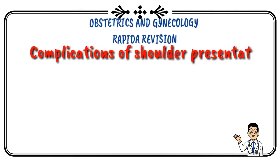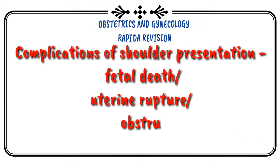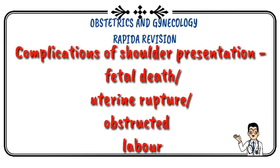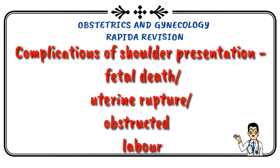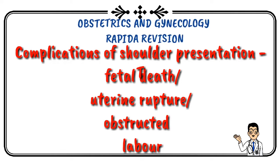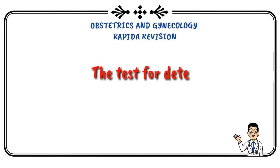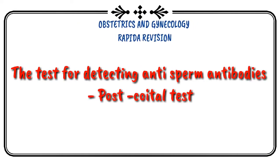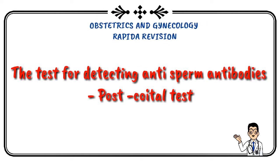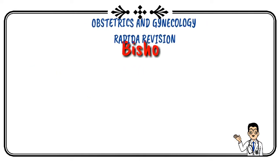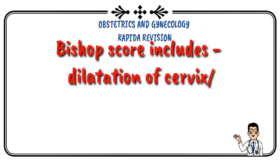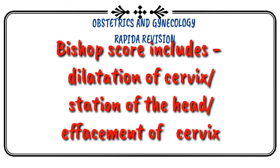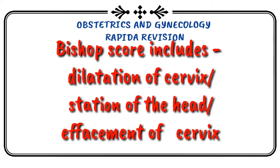Complications of shoulder presentation include fetal death, uterine rupture, and obstructed labour. Test to detect antisperm antibodies is the post-coital test. Bishop score includes dilatation of cervix, station of head, and effacement of cervix.